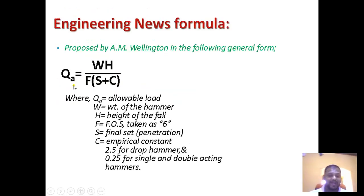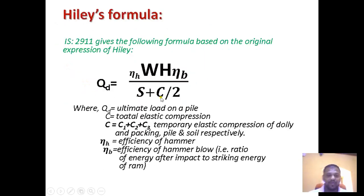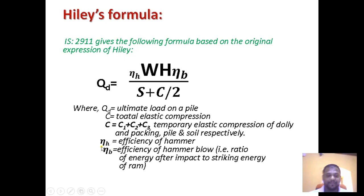This is very important — the Engineering News Formula directly gives the allowable load on the pile because a safety factor is included, but the Hiley's Formula gives the ultimate load on the pile, so we have to divide it by the safety factor. Here C is the total elastic compression: C = C1 + C2 + C3, where C1 is the temporary elastic compression of dolly and packing, C2 is of the pile, and C3 is of the soil. nh is the efficiency of hammer and nb is the efficiency of hammer blow — the ratio of energy after impact to the striking energy of the ram.